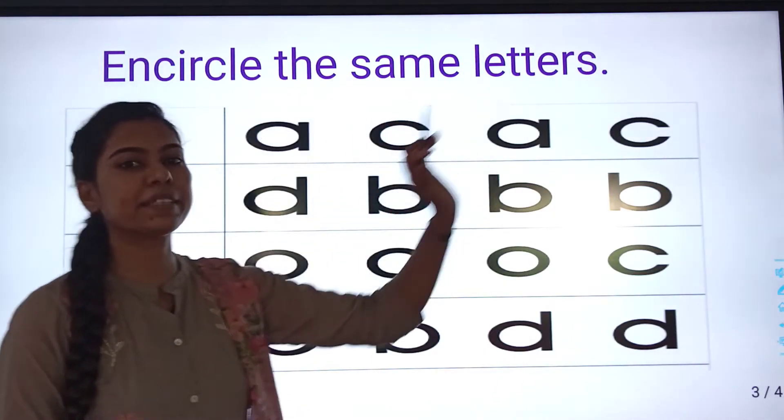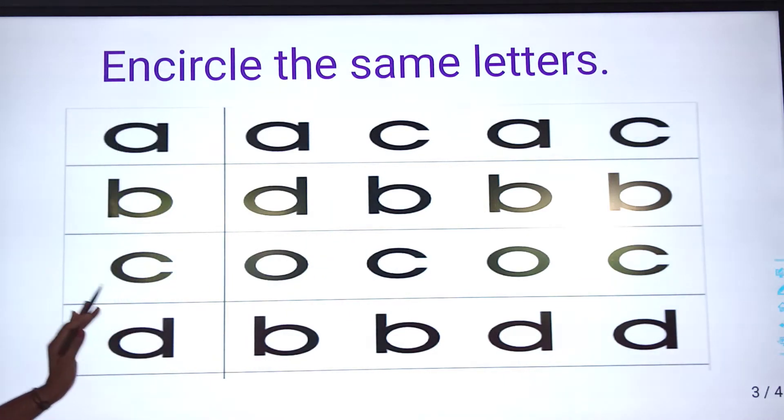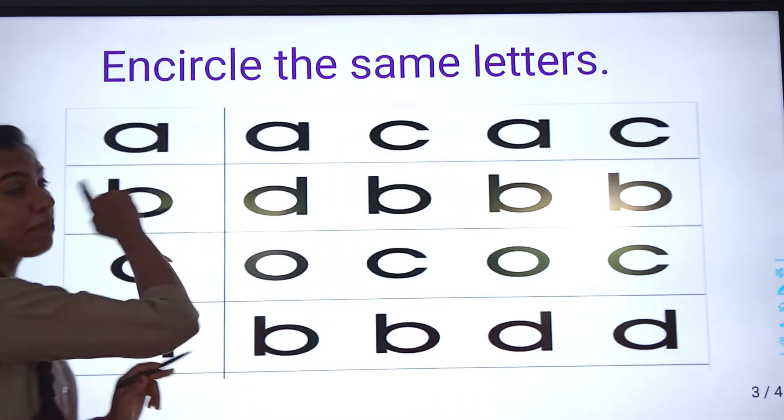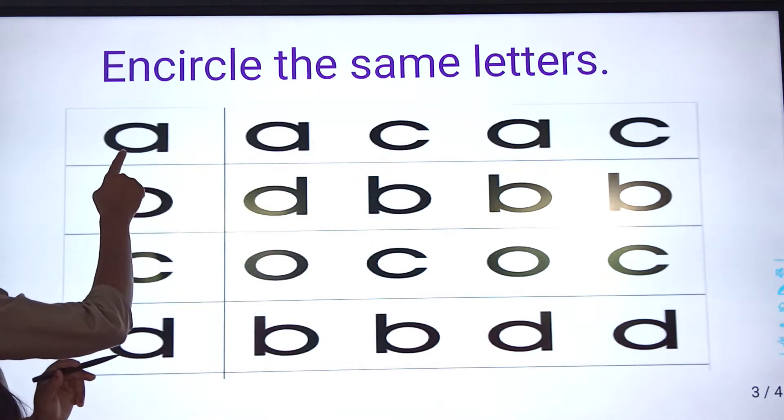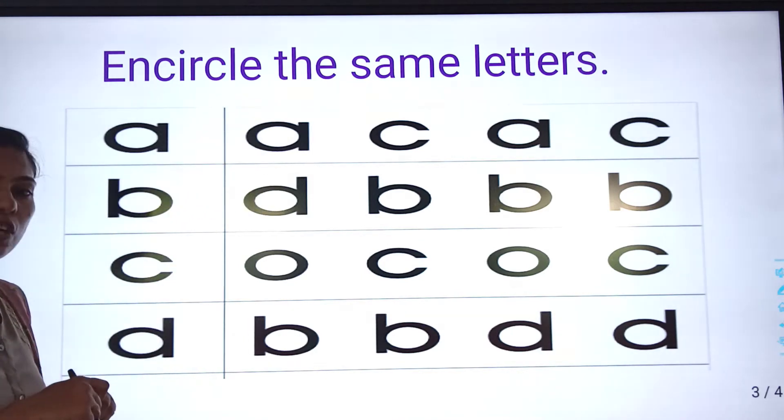Encircle the same letters. See children, yaha pae letters diya ga hai. Aur aapko ye wala letter, ye wala hi row mein, jitni bhi letter likhi hoi hai, same hooga. Aap usmei circle karay ga hai. Okay?